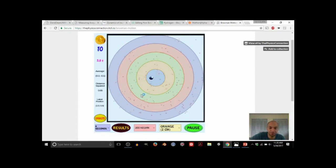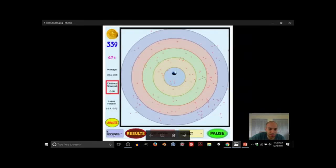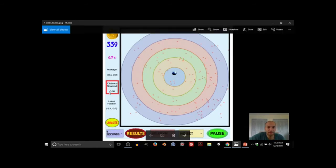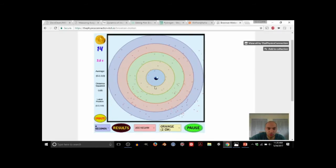When you hit results, it just keeps running one after the other. I already recorded many measurements. So if I let it run at four seconds at 200 Kelvin, what I get here is the distance squared, which is the distance that the ball has from the center to where it ends up squared. This gives the average of that.